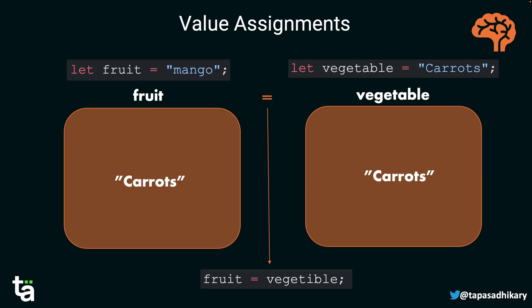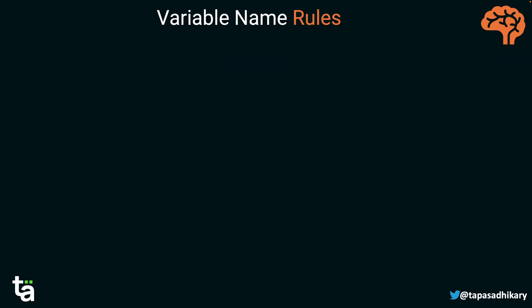Think about a situation where you're writing a program without variables — you cannot define things once and use them later. It would be really hard. Variables are very important.